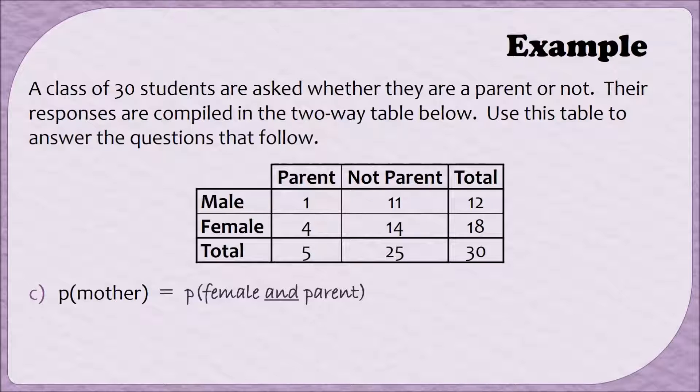To find this probability then, we need to find all of the people that are in the row for female, but also in the column for parent. In other words, these four people here. This is going to be my numerator. Since we're still looking out of all of the people, our denominator will still be 30, and when we divide, we end up getting 0.1 with repeating threes.